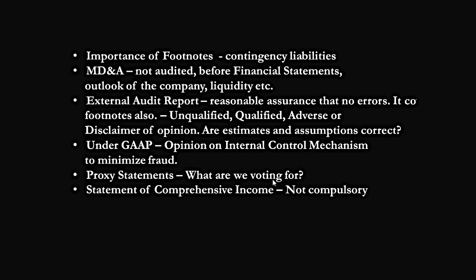The external auditor then gives their opinion, which can be: unqualified, qualified, adverse, or a disclaimer. Unqualified is the best opinion — it means the statements have been made perfectly as they should be. Qualified is issued when the auditor agrees the statements are fine except for a clause that deviates from the rules. Adverse opinion is when the auditor does not agree with the financial statements and data provided. A disclaimer of opinion is given when there is not enough data for the auditors to form any opinion.